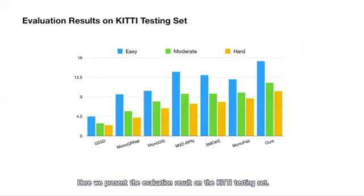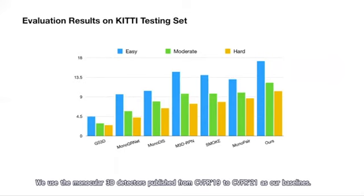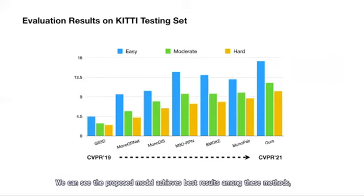Here, we present our evaluation results on the KITTI testing set. We use the monocular 3D detectors published from CVPR 2019 to CVPR 2021 as baselines. We can see the proposed model achieves the best results among those methods, including the easy setting, moderate setting, and the hard settings.